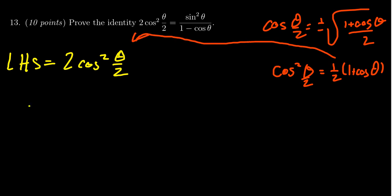By the half-angle identity, we get 2 × (1/2)(1 + cosθ). The 2 and 1/2 cancel out, so the left-hand side simplifies to 1 + cosθ.